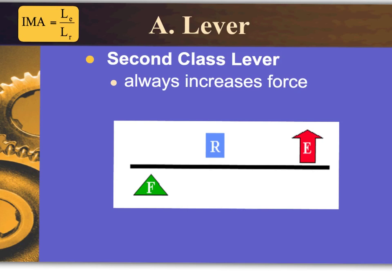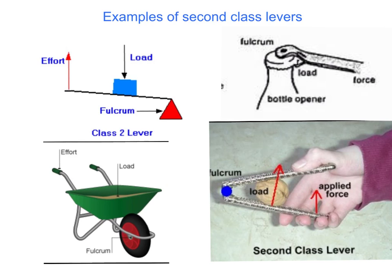A second class lever always increases the force. The fulcrum is at one end, the resistance is in the middle, and the effort is toward the other end. Examples include a wheelbarrow — the fixed point is at the wheel end, the load is what the wheelbarrow is carrying, and the effort force is the individual raising it. A nutcracker and a bottle opener also follow this arrangement, with identifiable fulcrum, load, and applied force.